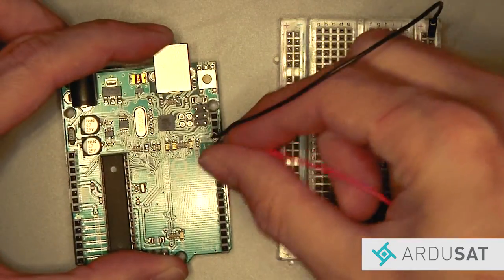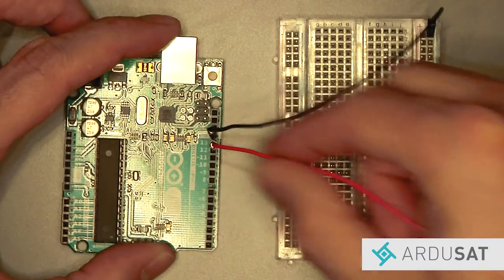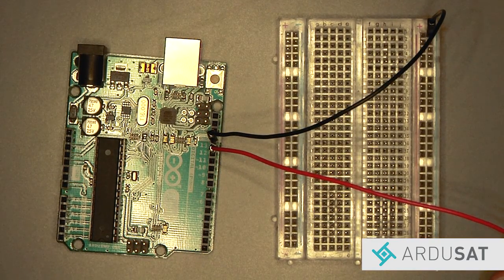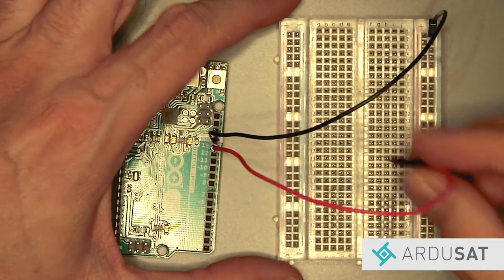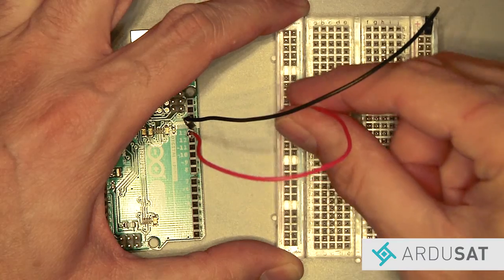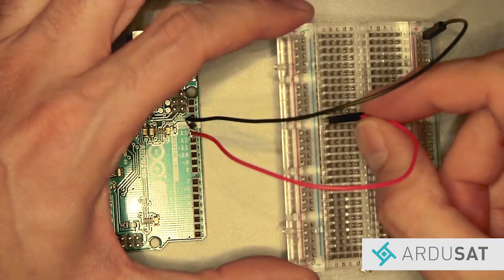Next take one end of the red jumper wire and plug it into pin number 13 on the Arduino. Then take the other end and plug it into column A row 12 of the breadboard.